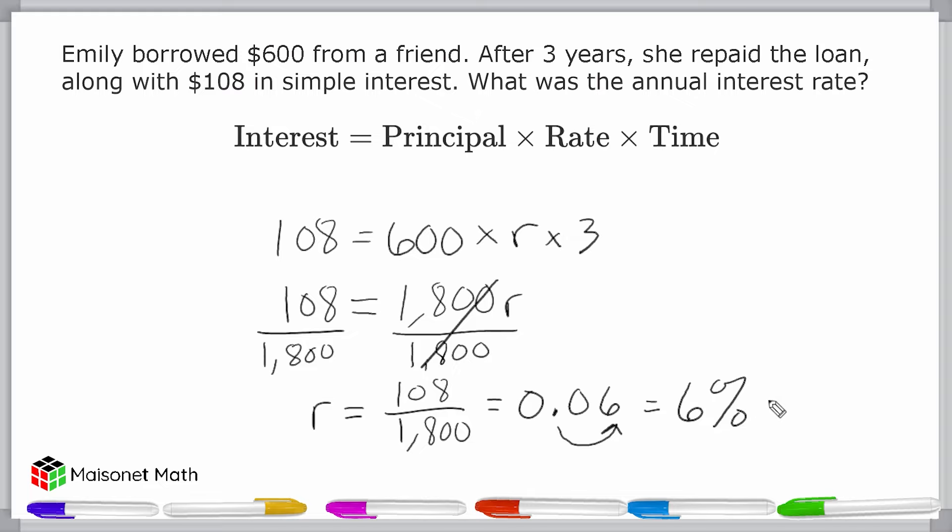To summarize, we use the simple interest formula to solve for the annual interest rate by plugging in the values for principal, interest, and time. And then we isolated the rate. This gave us the interest rate of 6% per year.